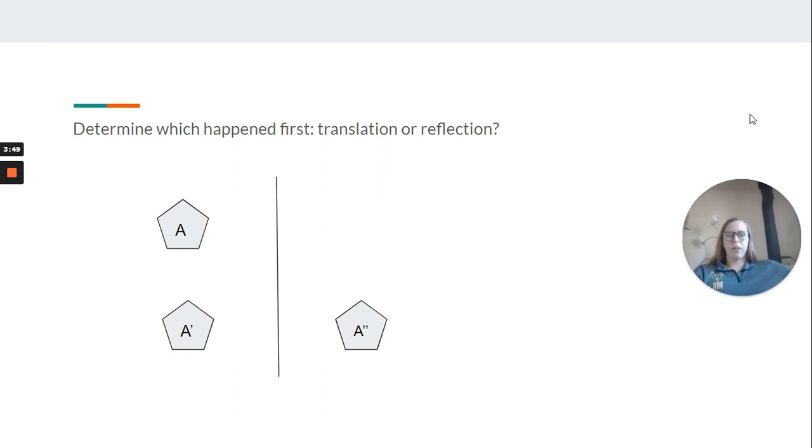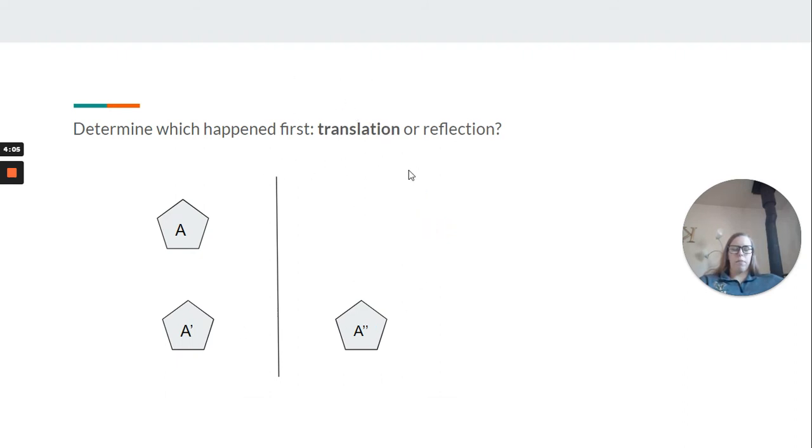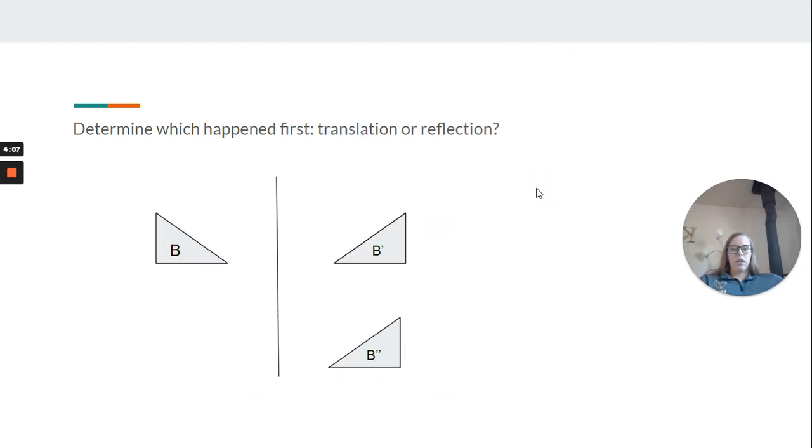Now this says, determine which happened first, the translation or the reflection. We can tell by one where the reflection is, but two by the hash marks. So here we translated, then we reflected. So the translation happened first. Go ahead and do this one on your own, and then we'll talk about your assignment.